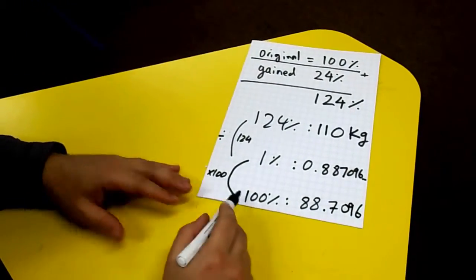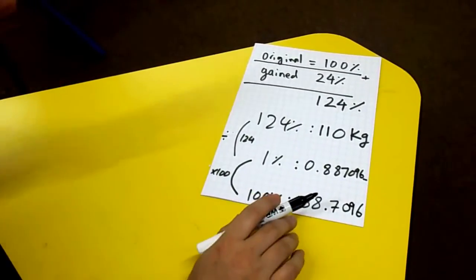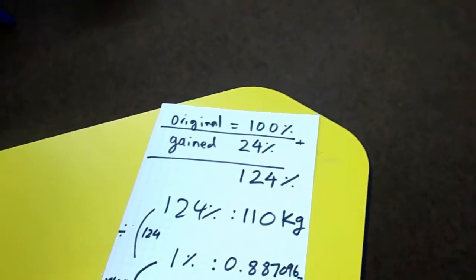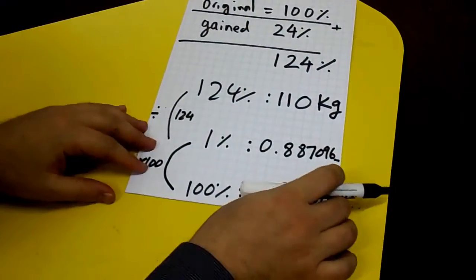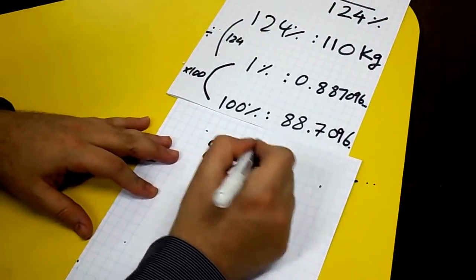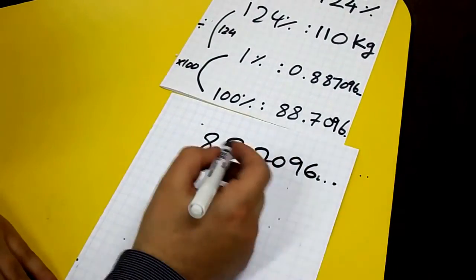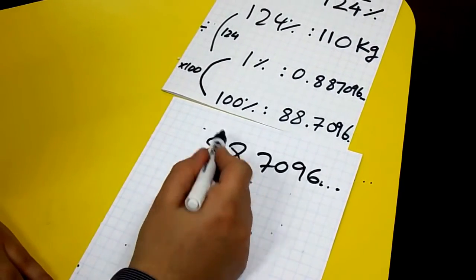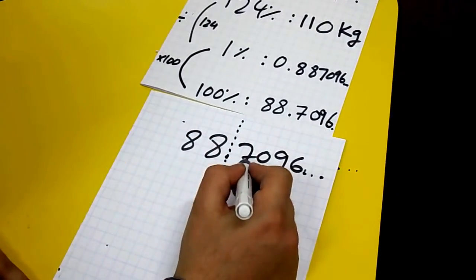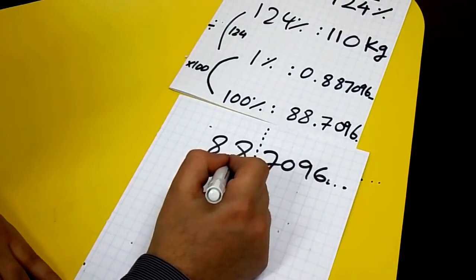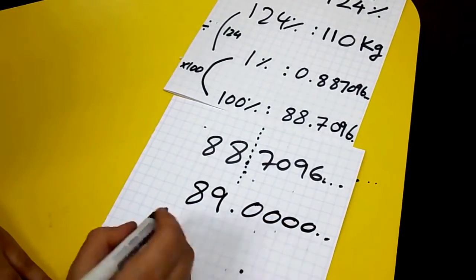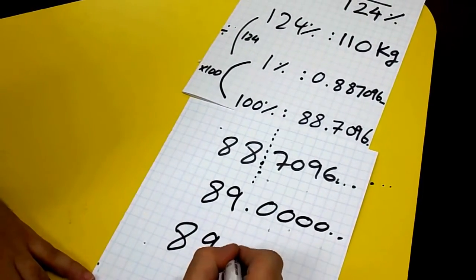Now, the question says: round your answer to 2 significant figures. Because I don't actually need to write down all the other values there — they're not really relevant. I've got to round this answer to 2 significant figures. So I've got 88.7096. My first significant number is 8, which is 80 — then you've got the units column here. Over here I've got 7. This 7 determines that 8 goes up once, so it becomes 89. And then everything else becomes 0. So, to 2 significant figures, my weight is 89 kilograms.